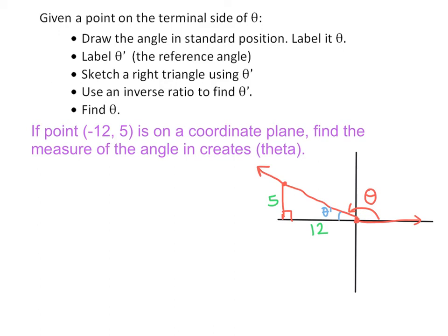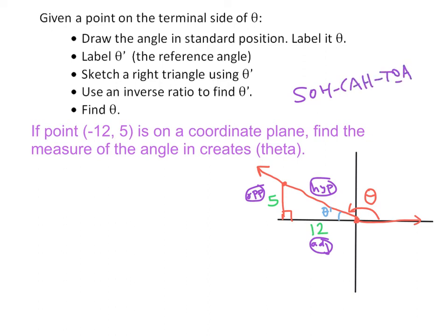To find the measure of theta prime, we use inverse trig. The hypotenuse is across from the right angle. Based on theta prime, the opposite side is 5 and the adjacent side is 12. With SOHCAHTOA, opposite and adjacent are in the tangent ratio.